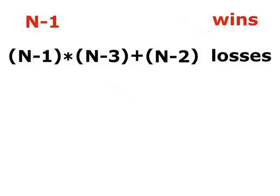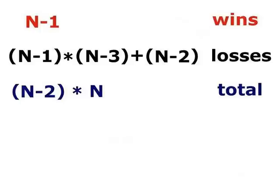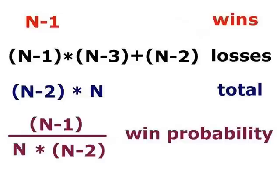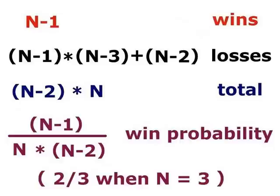Let's make the sum. n-1 wins, n-1 times n-3 plus n-2 losses, n-2 times n total wins plus losses. The winning probability, accordingly, is n-1 divided by n times n-2. When n equals 3, the result is 2 thirds.